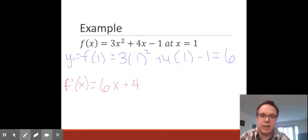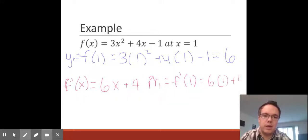To get our slope, we're going to plug in 1. So we get 6 times 1 plus 4. Our slope is 6 plus 4, or 10.